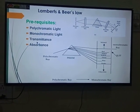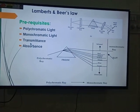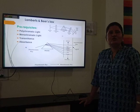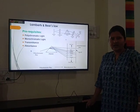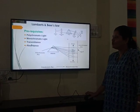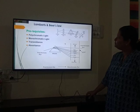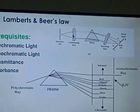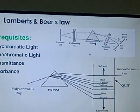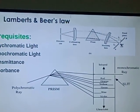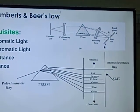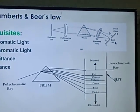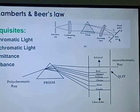Transmittance is the ratio of transmitted light to incident light. When we pass a beam of light through a prism or grating, there is an exit slit through which we can pass monochromatic light — a single particular wavelength.